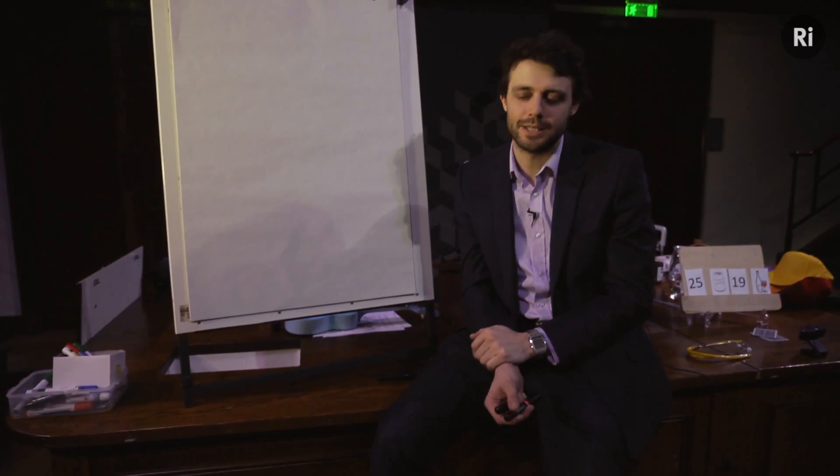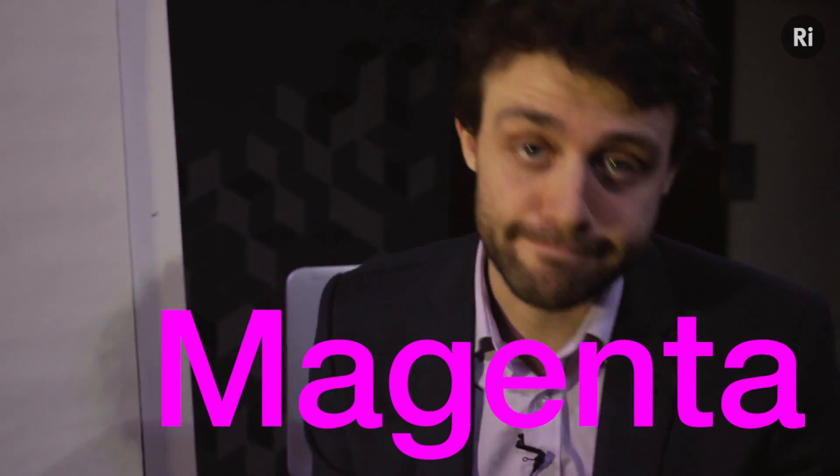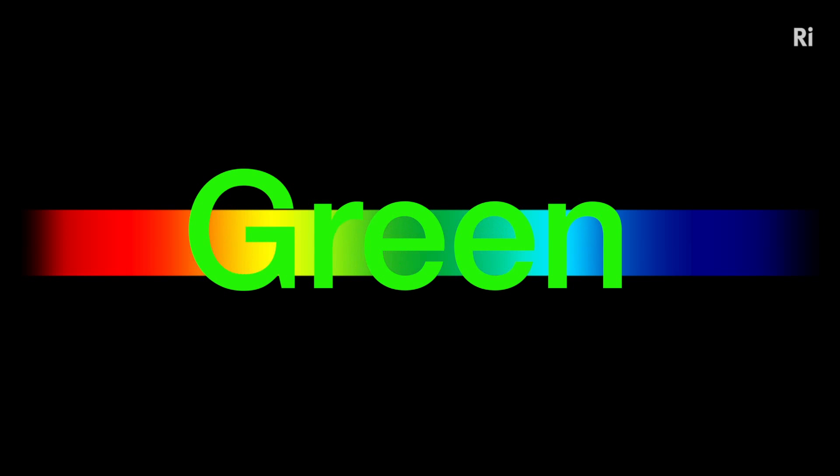So what about purple? What about magenta? Well, what should your brain do if your red cone fires at one end of the spectrum and your blue cone fires at the other end, but your green cone doesn't fire? Does it do the same trick? Does it think 'I must be looking at a color in between red and blue'? Well, the color in between red and blue is green, and you're definitely not looking at something green because your green cone isn't firing. So your brain invents a color. It makes up a color, and that color is magenta.